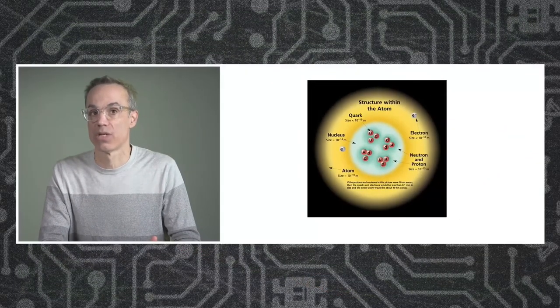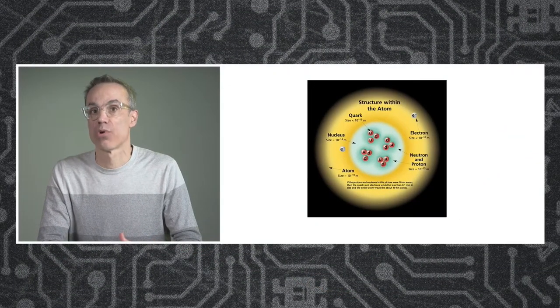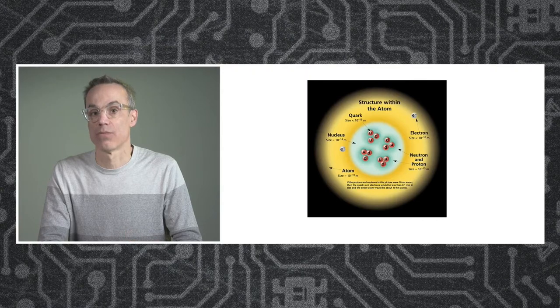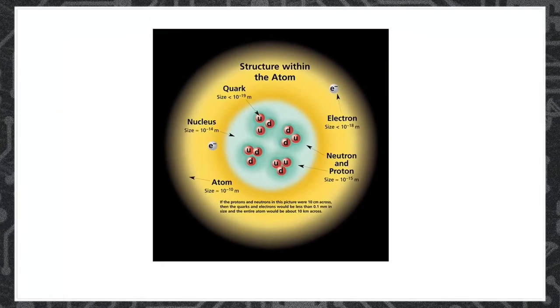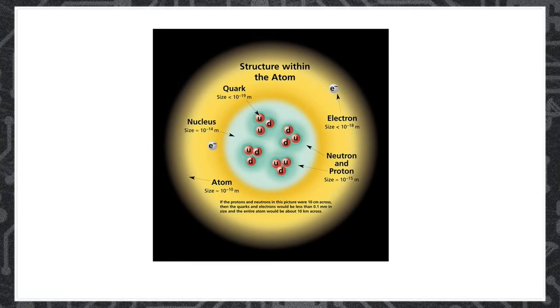To give you a sense of scale, an atom is about one ten billionth of a meter in size. Neutrons and protons are about one quintillionth of a meter in size, and quarks, what we're looking at right now, are a billion billionth of a meter in size.